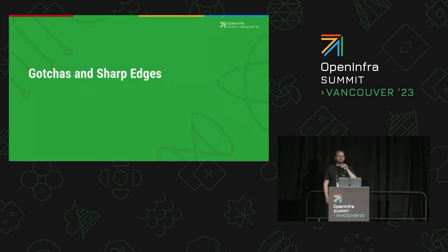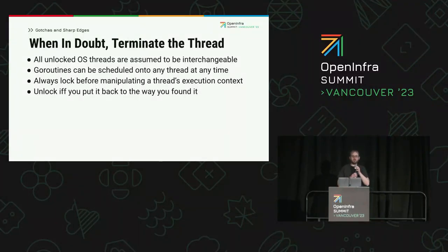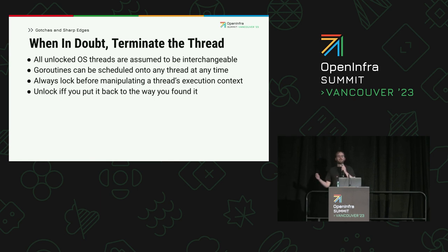Manipulating the execution context of threads in a language which hides threads from the application is not always going to be easy. There are sharp edges and gotchas you need to be aware of. The Go runtime and most Go code assumes, quite reasonably, that all execution contexts are made equal — that they all have the same file descriptor table, view of the file system, UID, GID, network interfaces, etc. If you violate the invariant that all unlocked OS threads are fungible, you're going to have a bad time. Always lock your goroutine to a thread before manipulating its execution context, and only unlock after you've put the thread back exactly the way you found it — which may not always be possible. When in doubt, keep the goroutine locked to the thread and let the runtime terminate it.